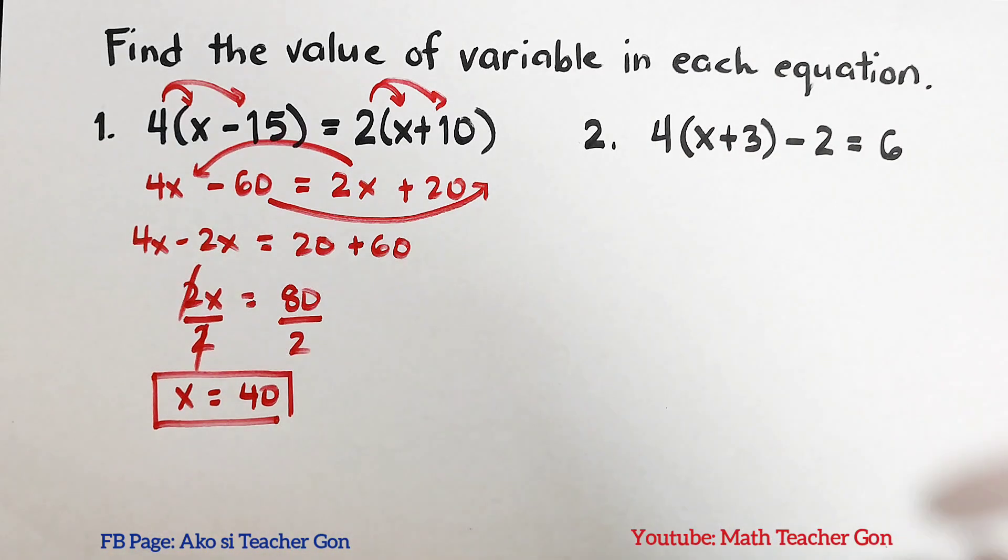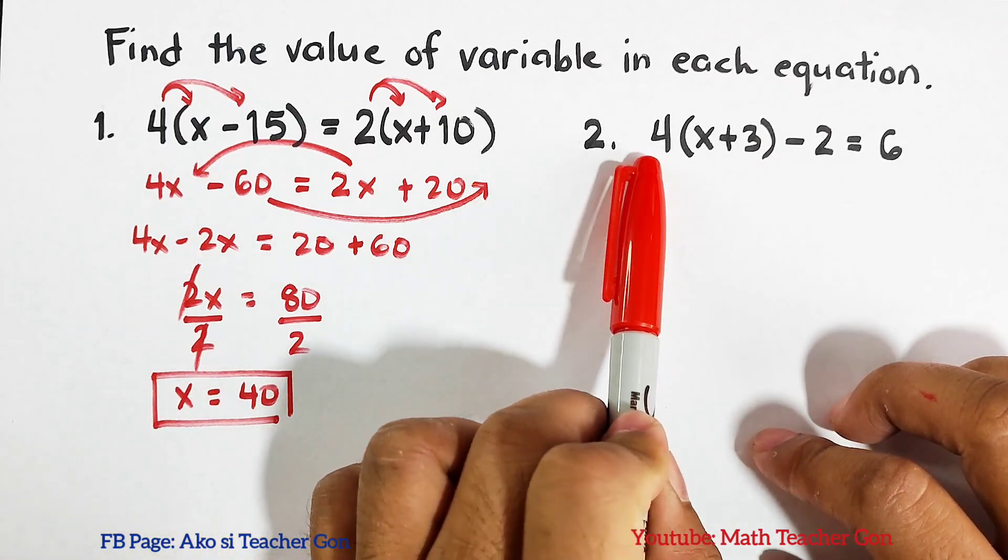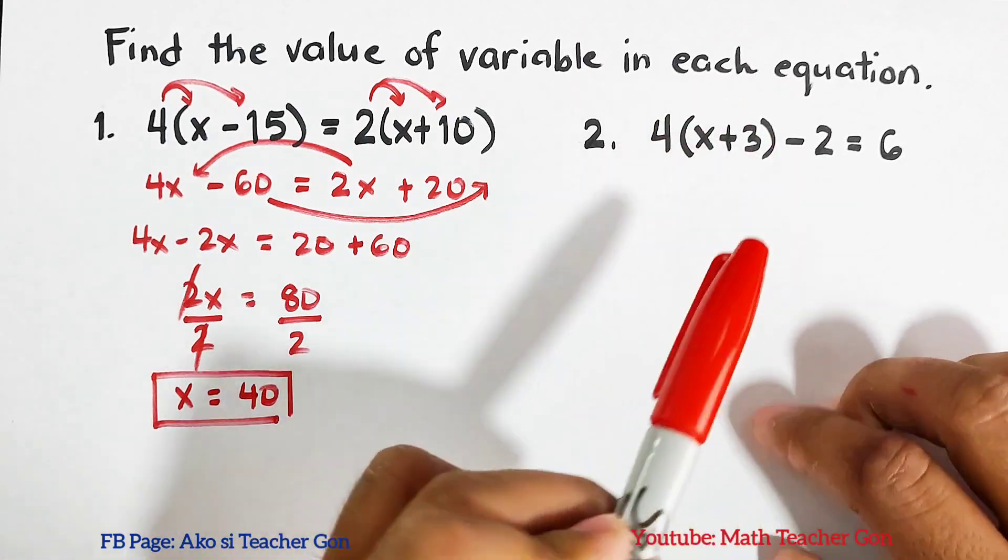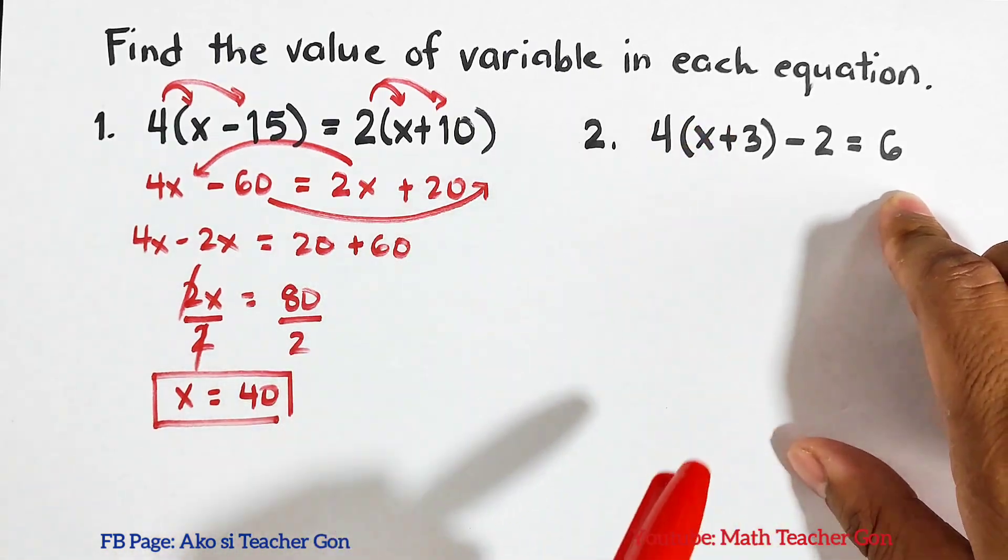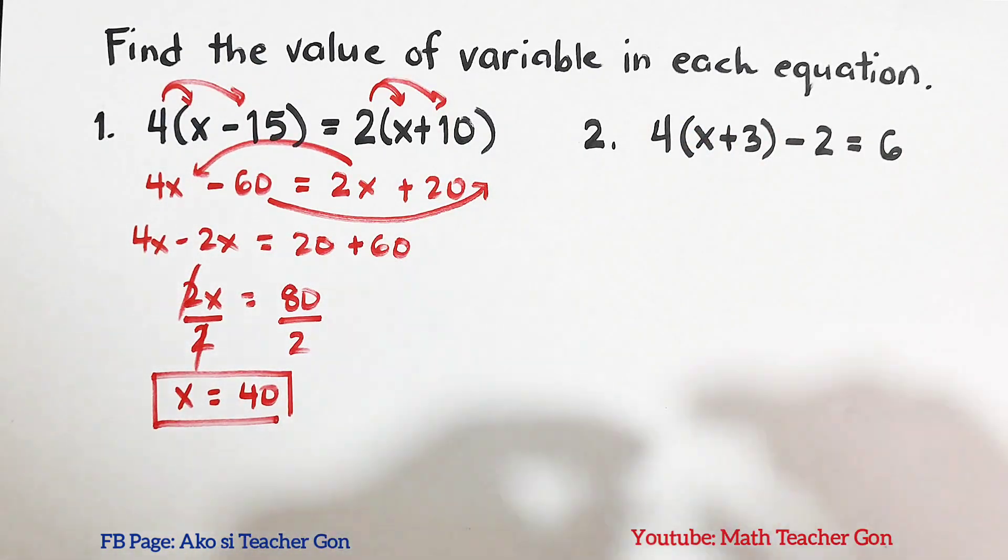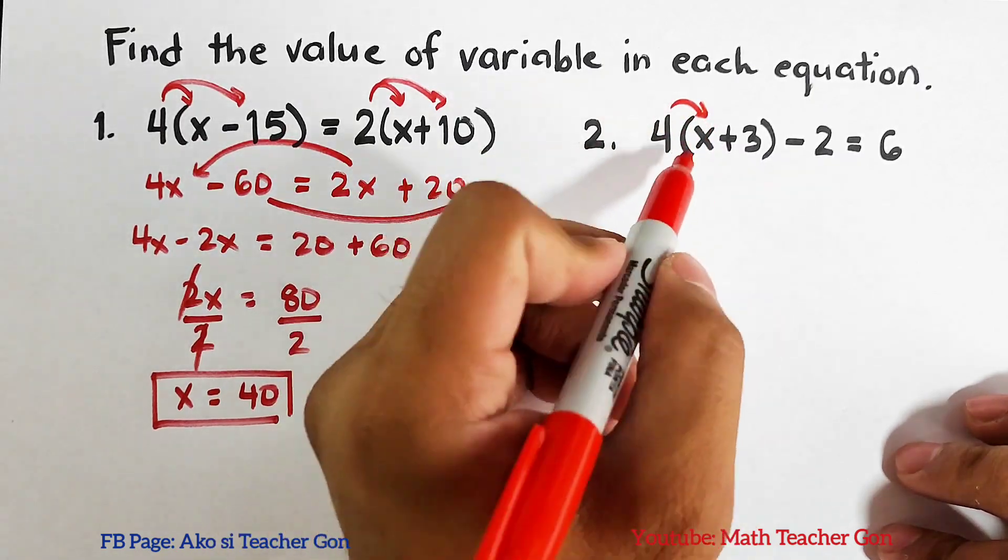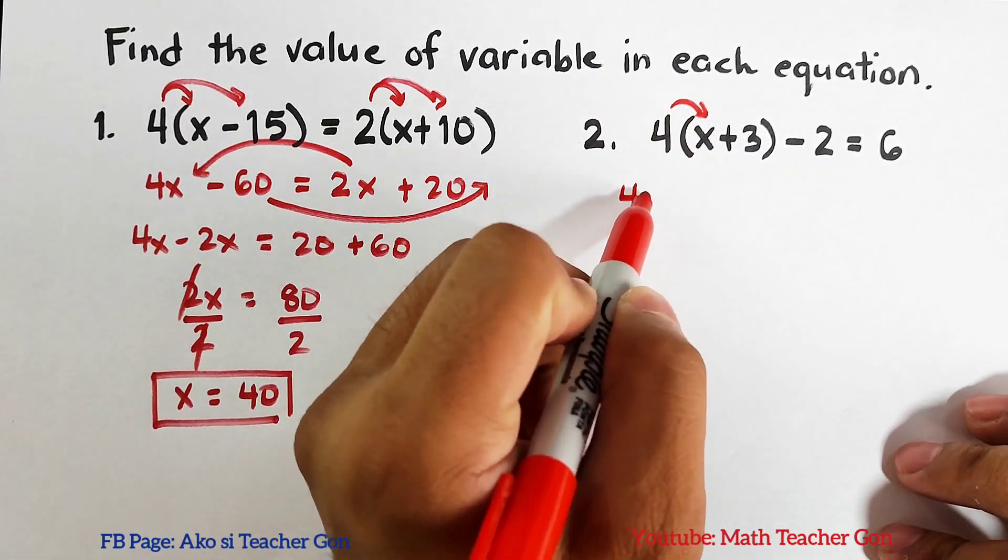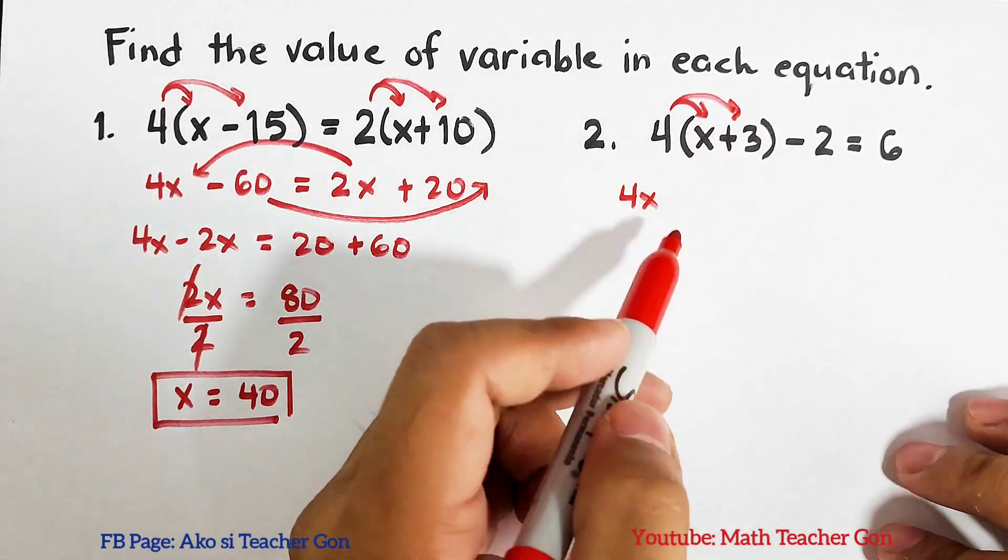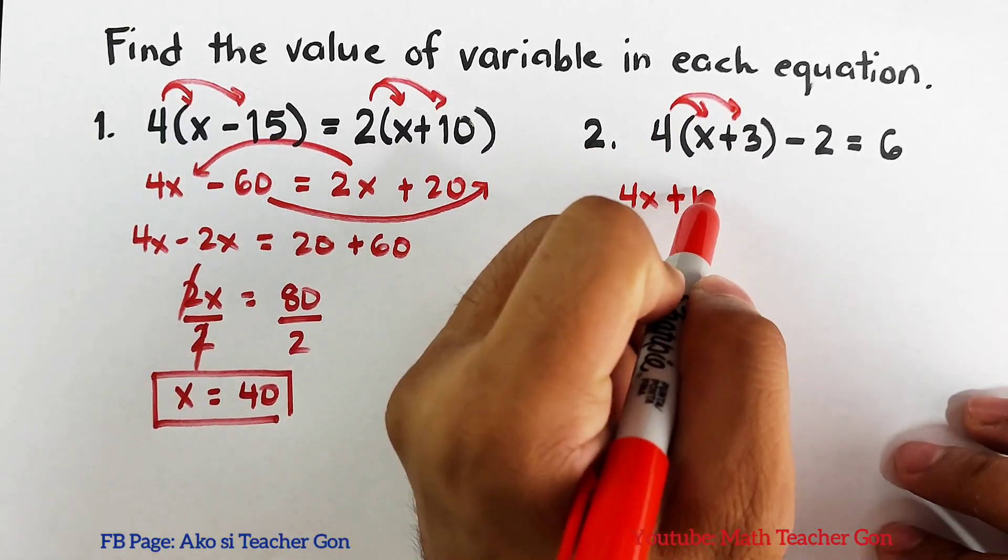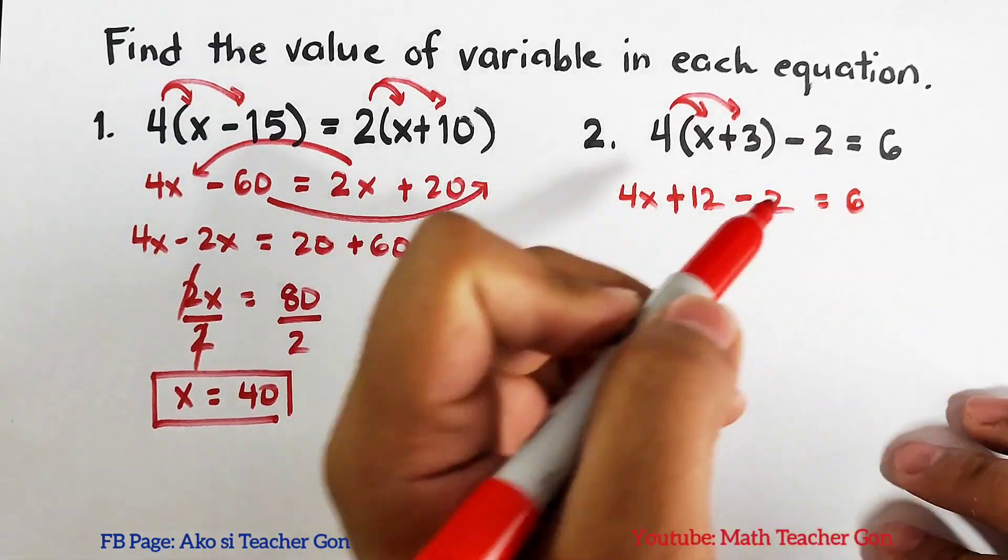For item number 2, it is 4(x + 3) - 2 = 6. Now for this equation we need to simplify this part. We will also use the distributive property. Multiply this: 4 times x, that is 4x. Here, 4 times 3, that is plus 12. Copy minus 2 is equal to 6.